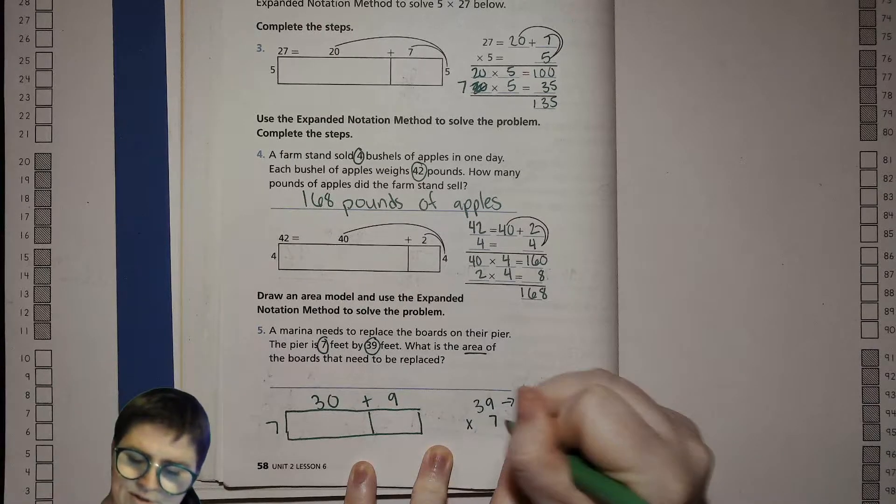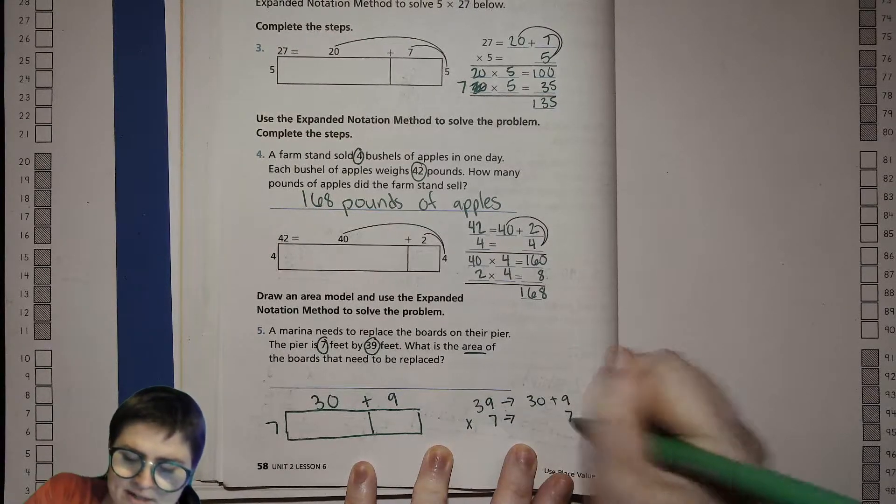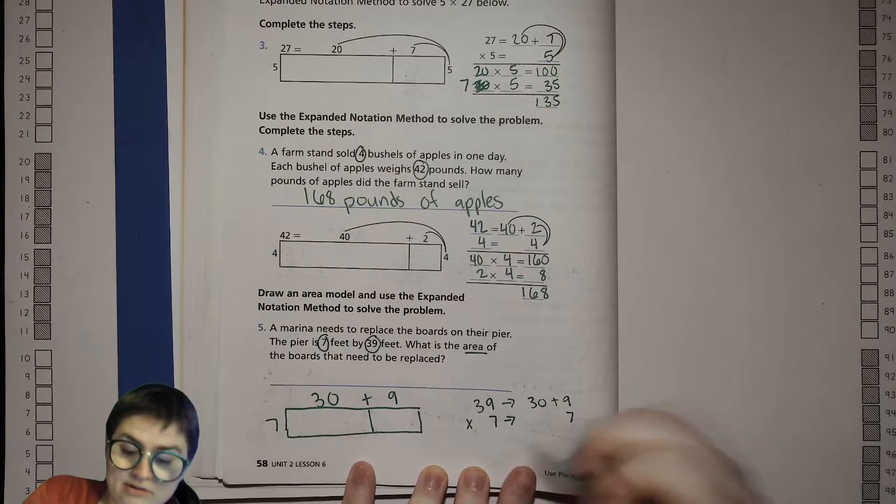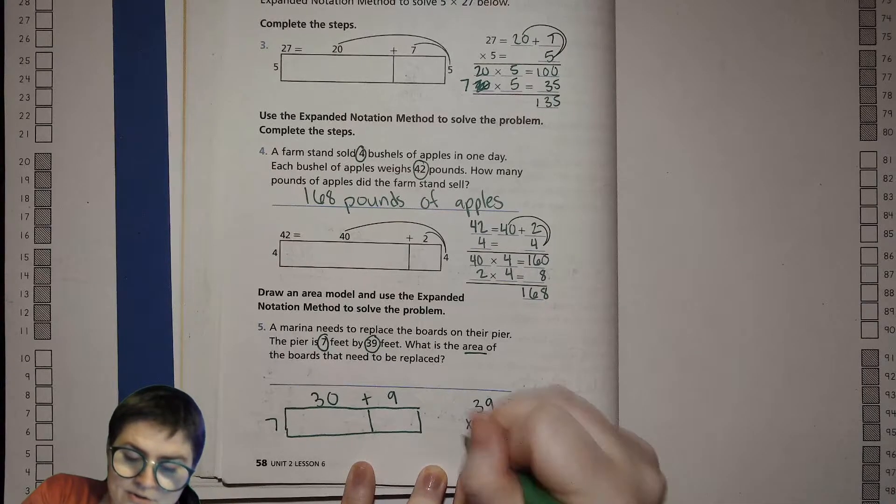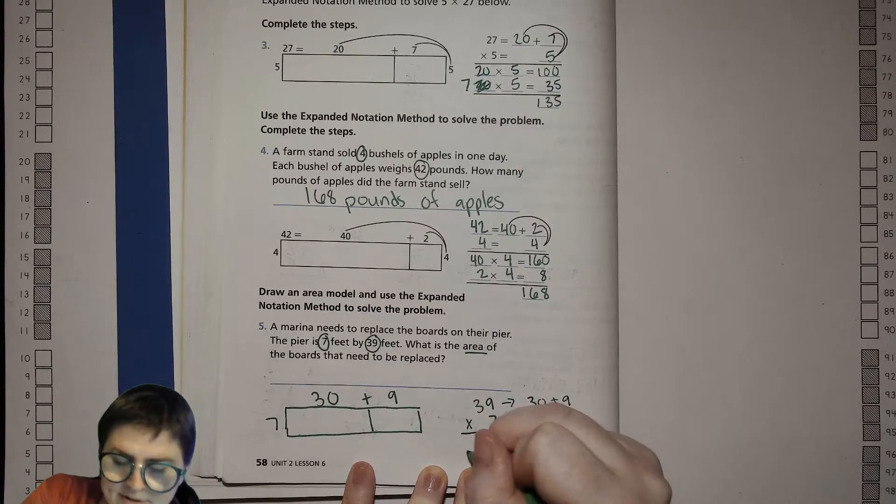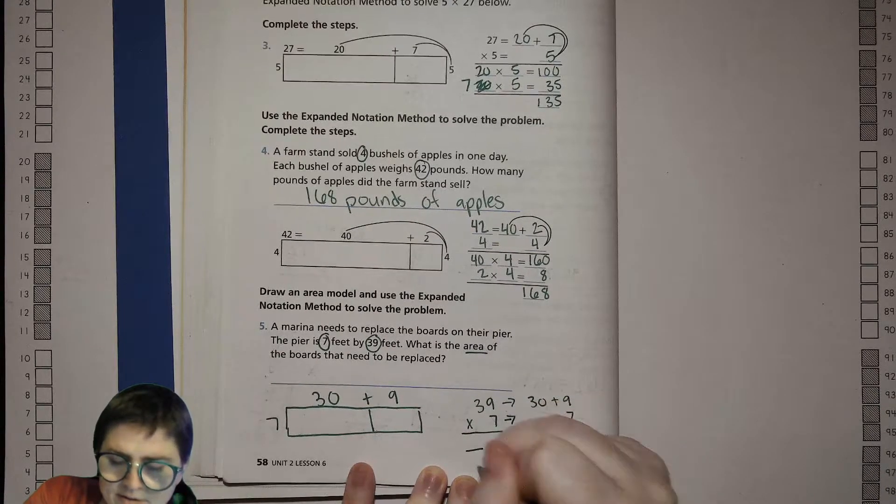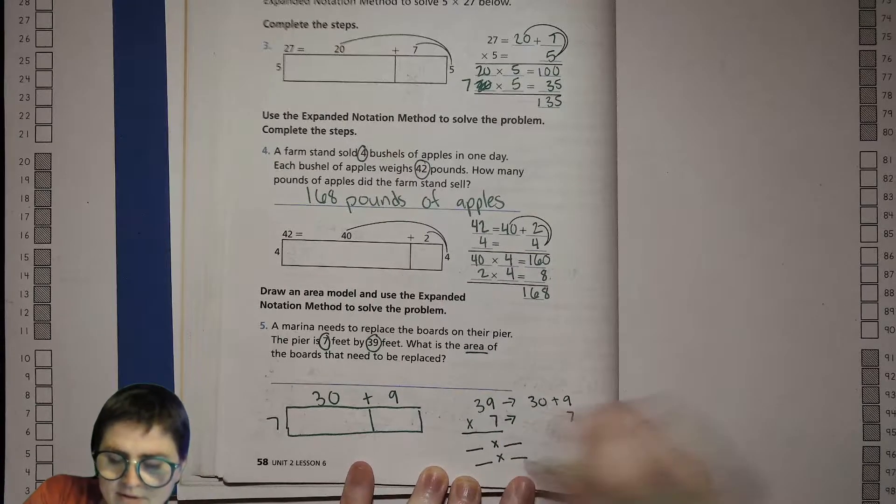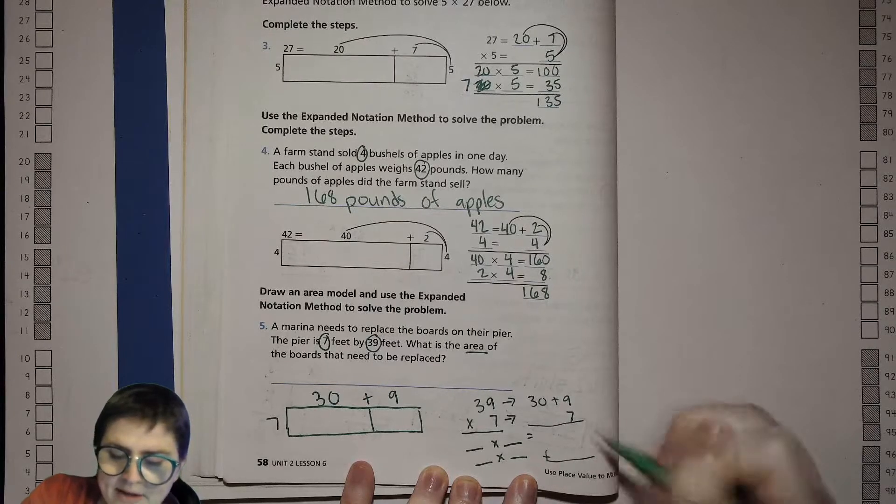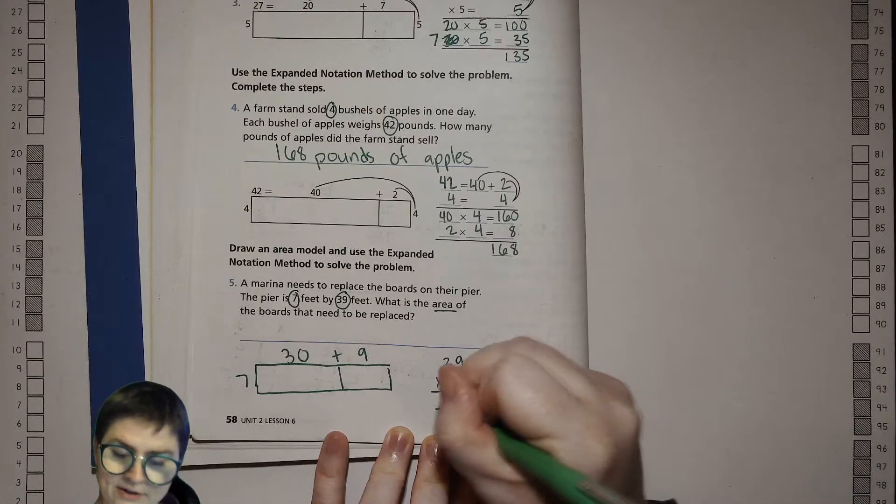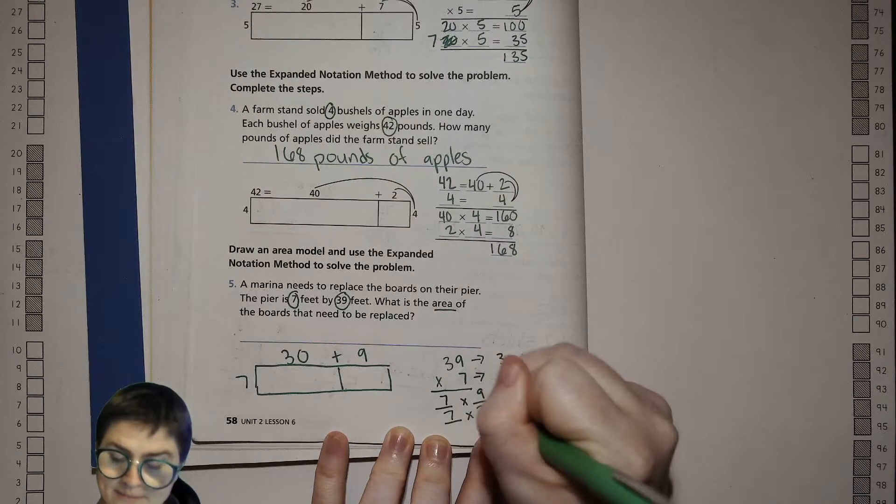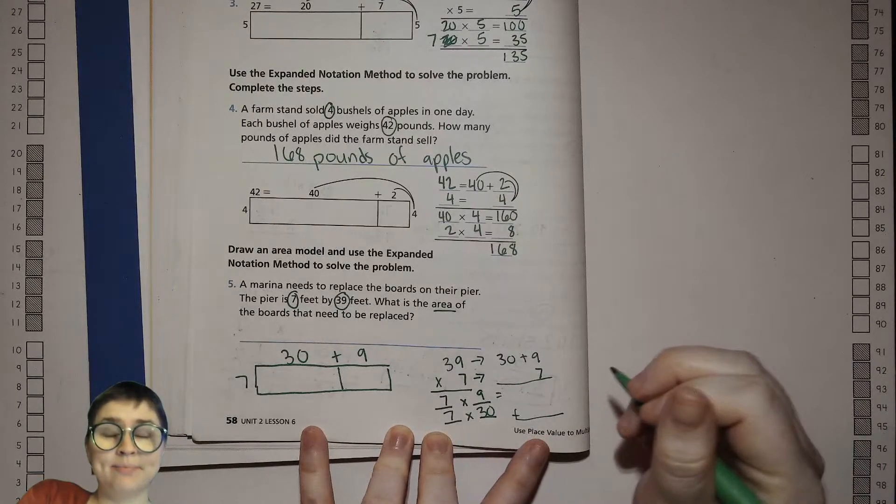Then we do just 7. This time I'm going to do the ones digits first because we're just going to add them up, so it doesn't really matter. We'll have 7 times 9 and then we'll have 7 times 30. 7 times 9 is 63.